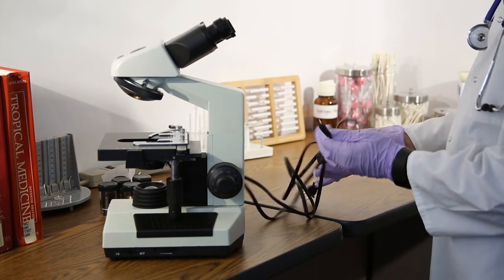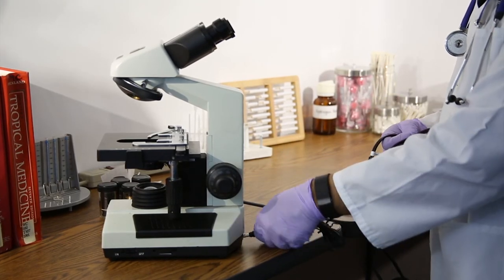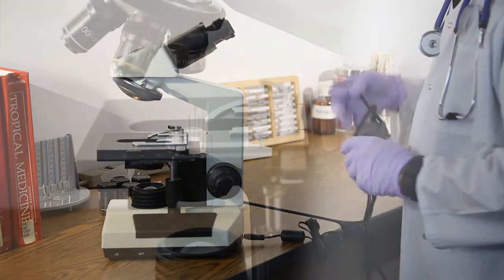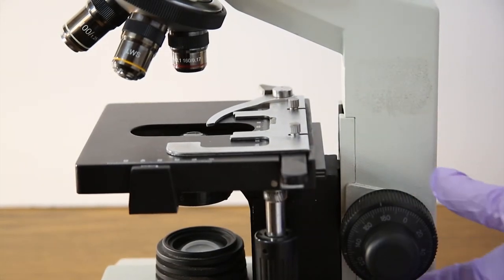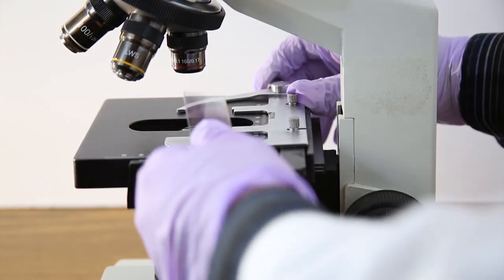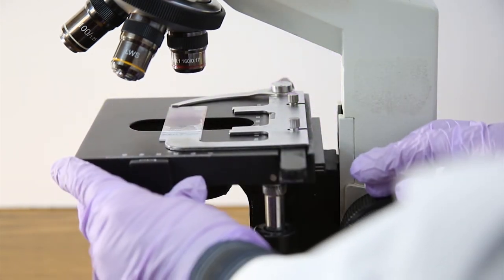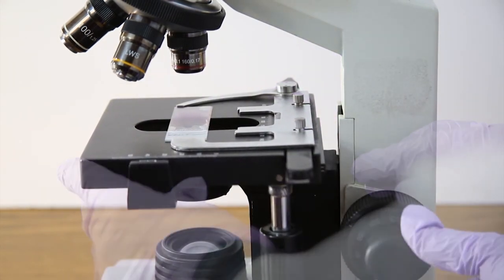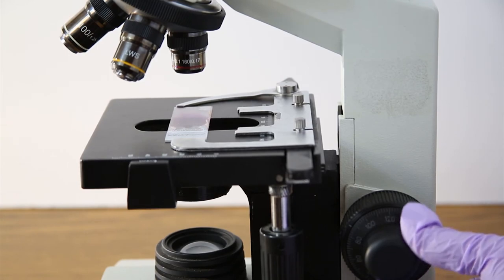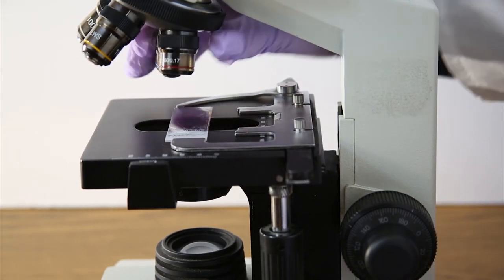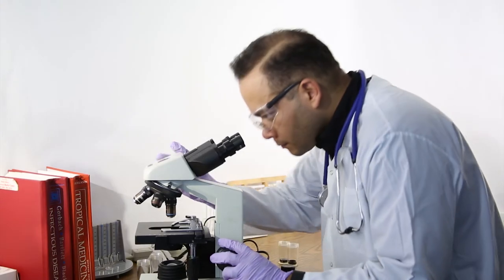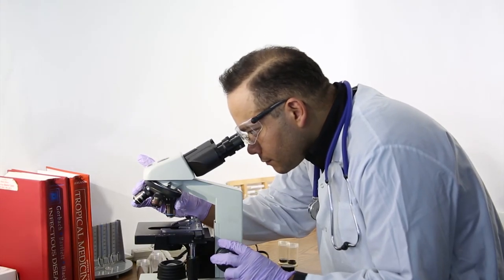To operate, plug the AC power cord into the appropriate grounded AC outlet and into the back of the microscope. Rack the condenser down, place a slide onto the stage and raise using the large knob until just below the lens. Adjust focus with the fine adjustment which is the smaller knob. Once the slide is in focus, you may use the other lenses with higher or lesser power and adjust accordingly.